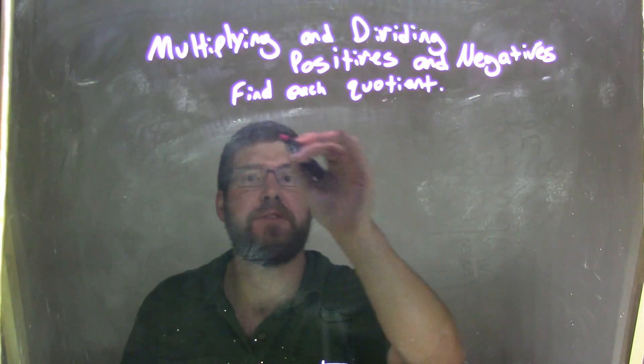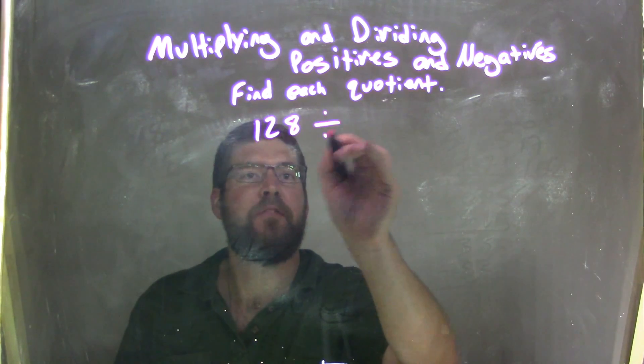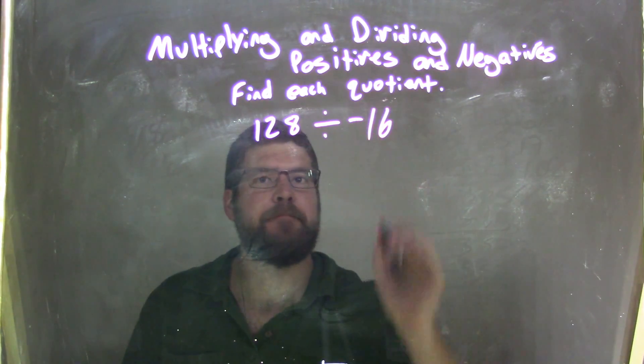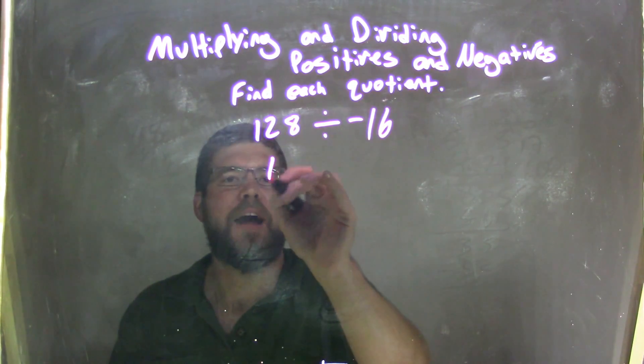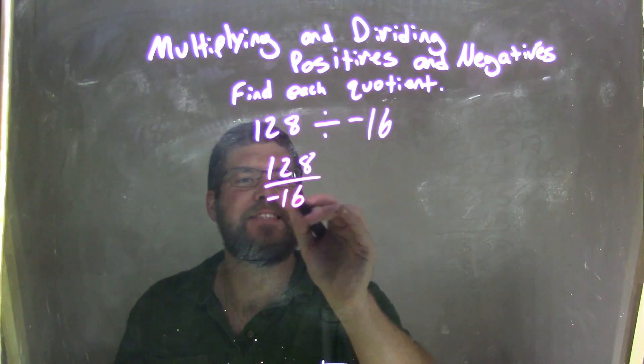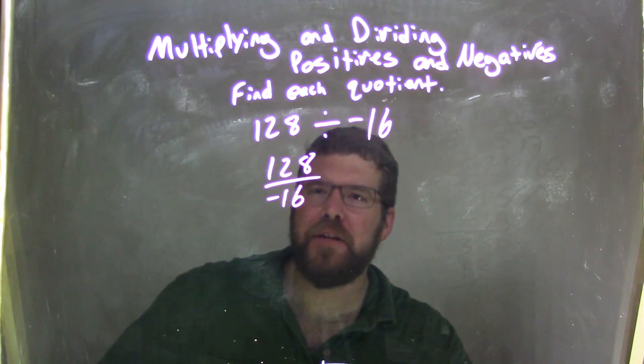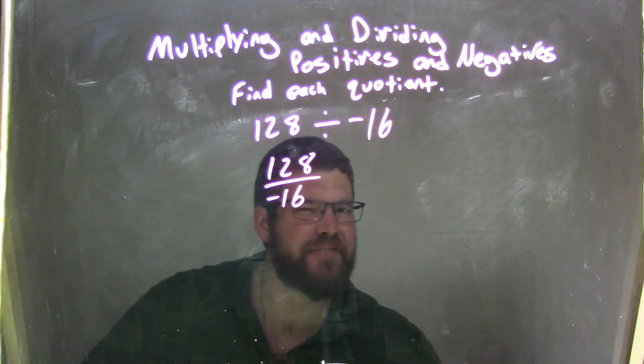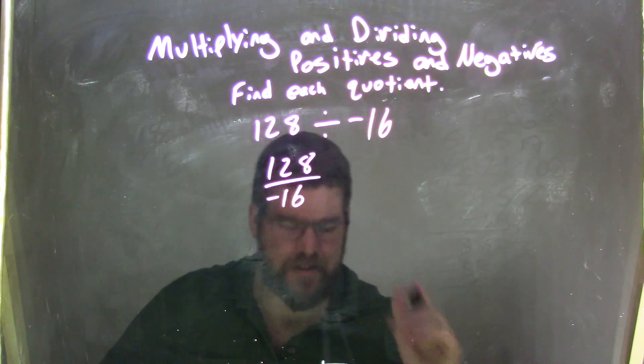So if I was given this quotient, 128 divided by negative 16, I can rewrite that as a fraction: 128 over negative 16. Well, I want to break down 128. I can't really see right ahead how many times 16 goes into it.